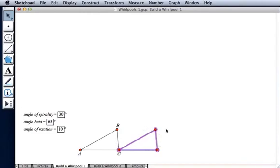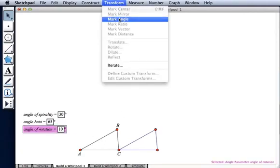Now I'd like to take this translated triangle and rotate it by 10 degrees about point C. So to do that, I'll double-click point C to mark it as the center of my rotation, and I'll select the angle of rotation and choose Transform, Mark Angle.